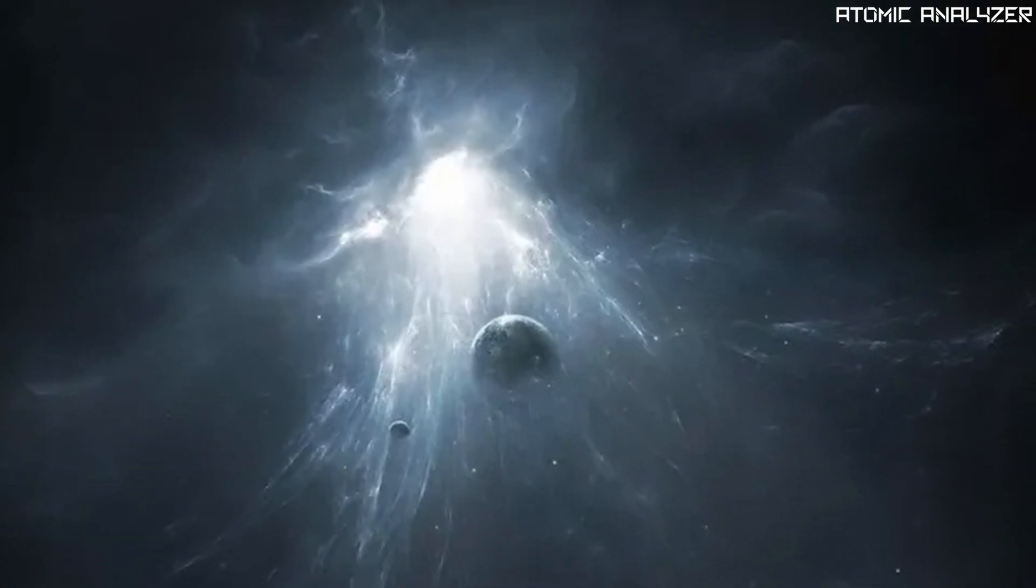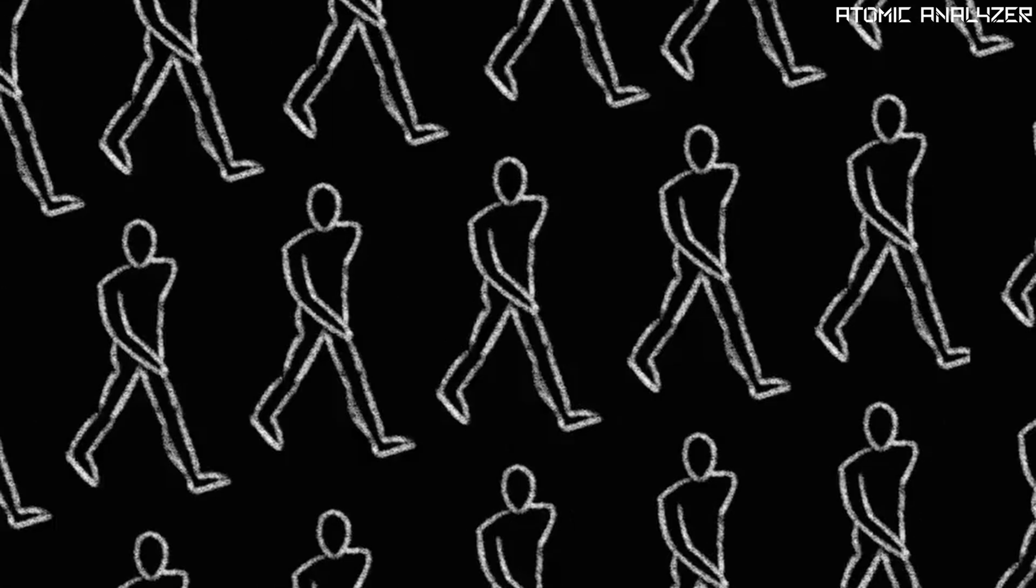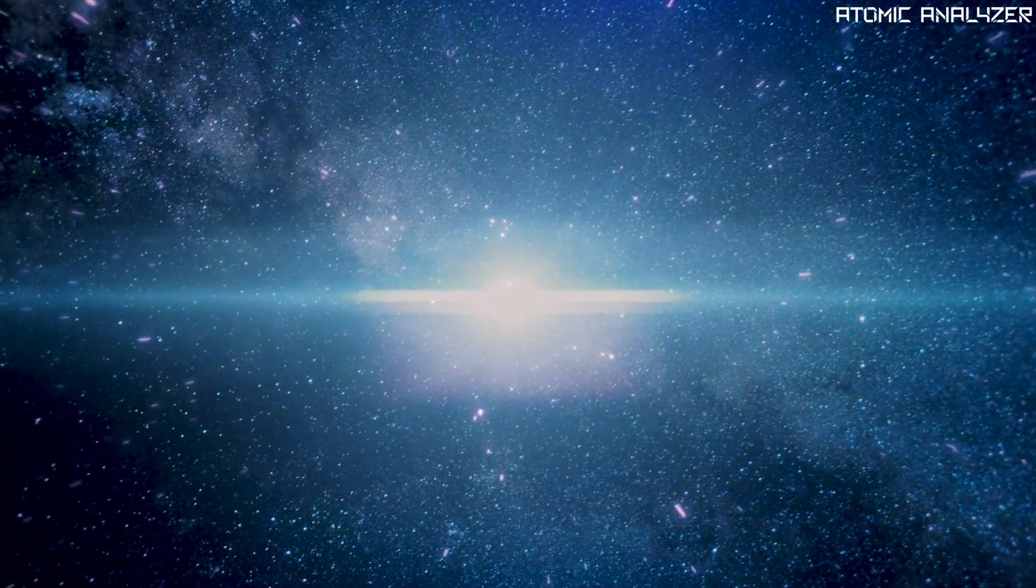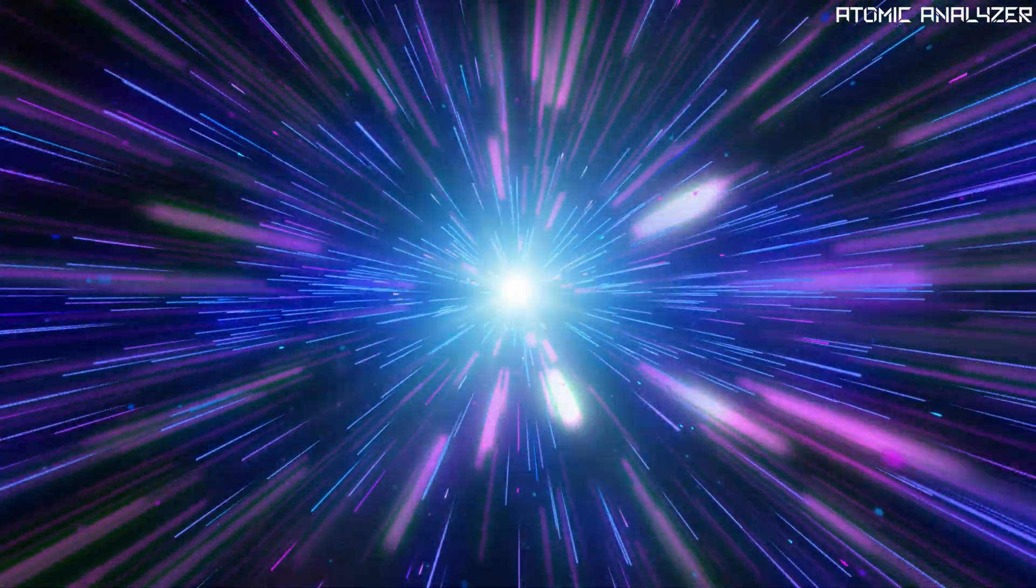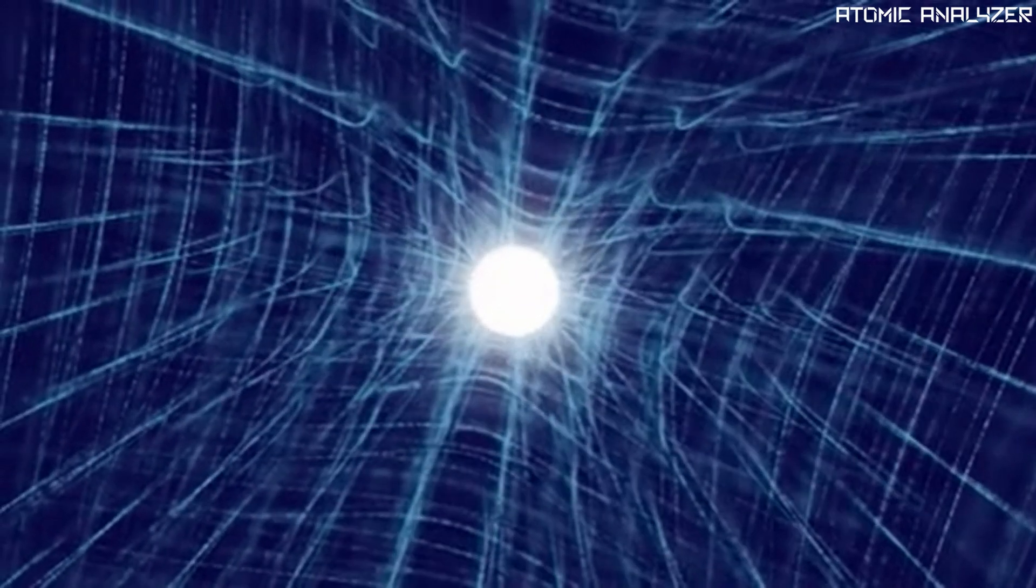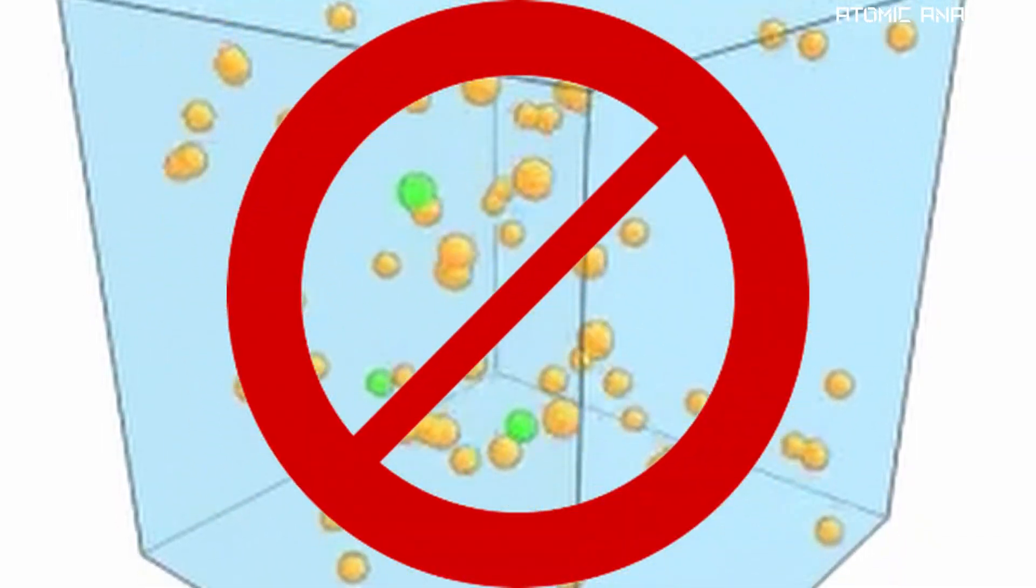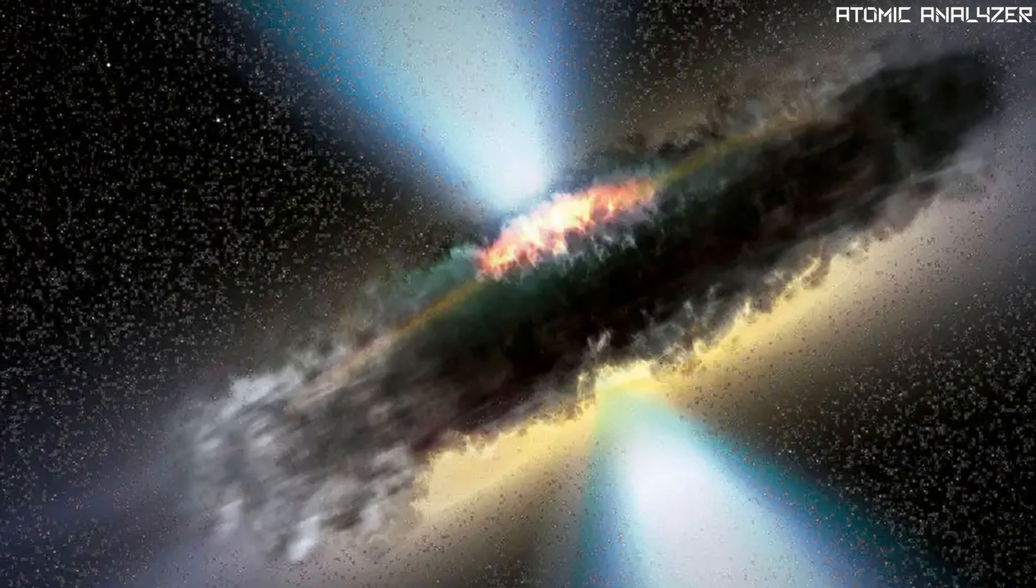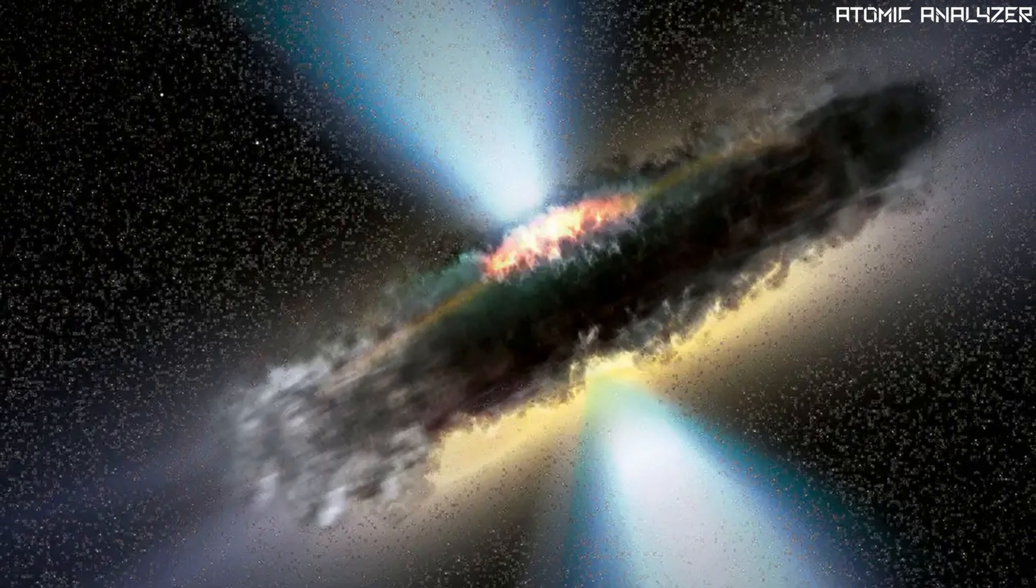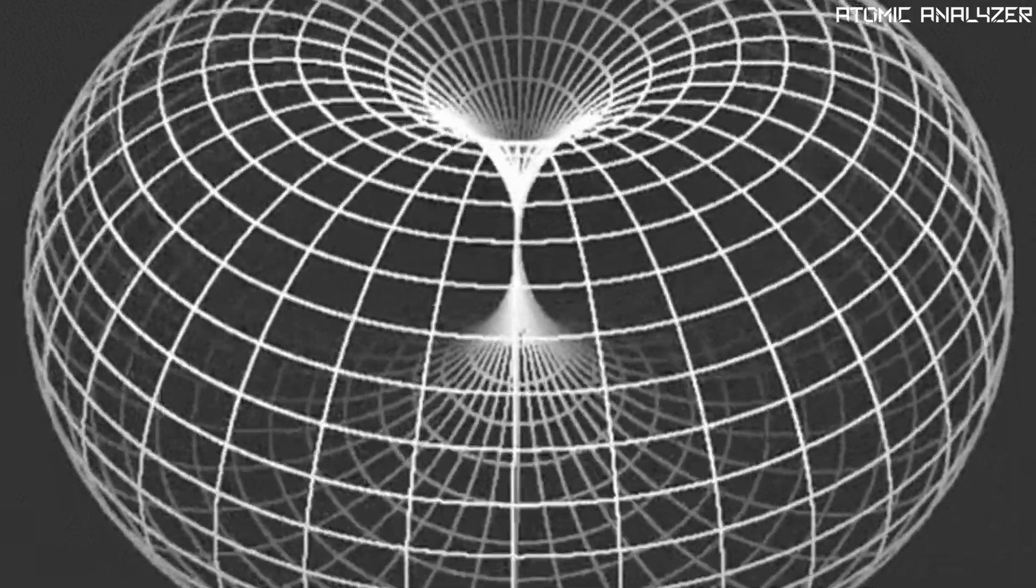We can't simply run the process of black hole formation in reverse and get a white hole, because that would cause entropy to decrease. Stars don't miraculously appear out of gigantic cosmic explosions. So while general relativity is agnostic about the reality of white holes, thermodynamics gives the concept a hard no. The only way to form a white hole would be to have some exotic process operating in the early universe that baked the existence of white holes into the fabric of space-time itself.